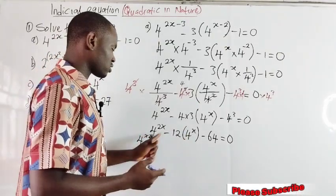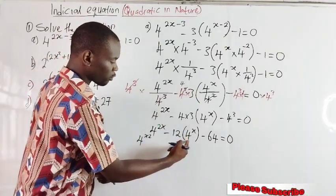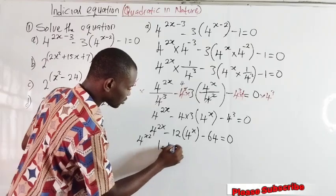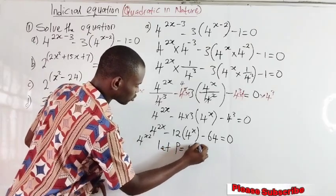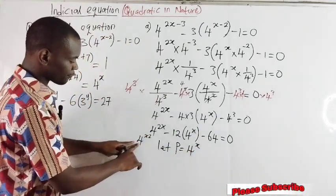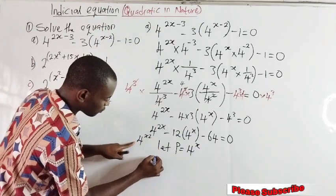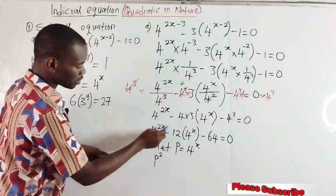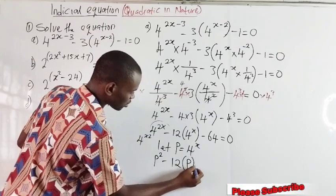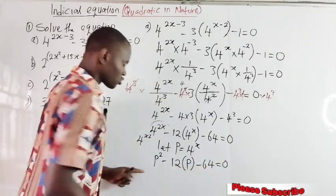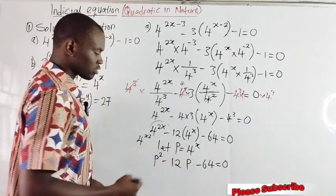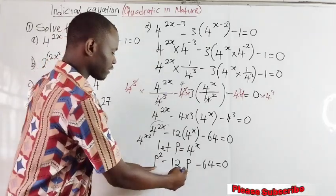Now import any variable of your choice aside from x and use it to substitute for 4 raised to the power of x. Let us use p. Let p be equal to 4 raised to the power of x. That means every time we have 4 power x, we put p there. So 4 power x squared becomes p raised to the power of 2. Then we have: p squared minus 12p minus 64 equal to 0. We now have a quadratic equation.